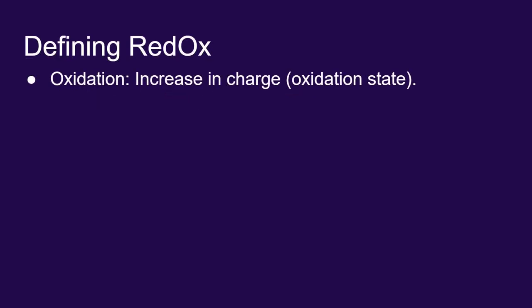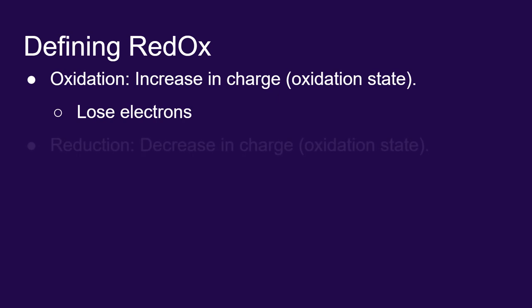This means that when we say something is oxidizing, we mean it's increasing its charge or increasing its oxidation state. You do that by losing electrons. If you get rid of electrons, you become more positive. You increase your charge. Therefore, reduction is the decrease or the reduction in charge. You're lowering your oxidation state. You do that by gaining electrons.